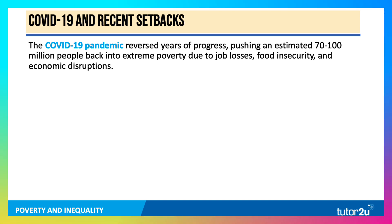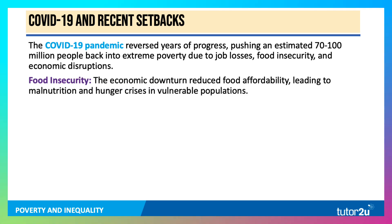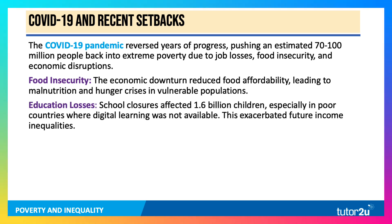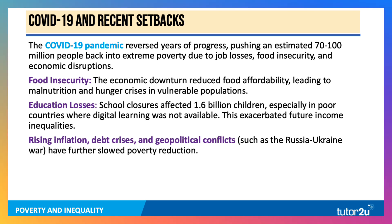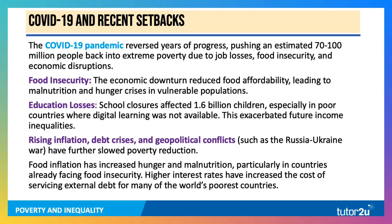By some estimates, between 70 and 100 million people have been pushed back into extreme poverty due to the impact of the pandemic. The downturn reduced food affordability, which has clearly had a damaging effect on malnutrition and hunger crises. School closures affected over 1.5 billion children, particularly in countries where digital learning was not available or accessible — and that's going to have a long-term consequence for future income inequality. In the aftermath of the pandemic, we've had rising inflation, external debt crises, and latterly geopolitical conflicts including the Russia-Ukraine war, that have slowed down or reversed poverty reduction.